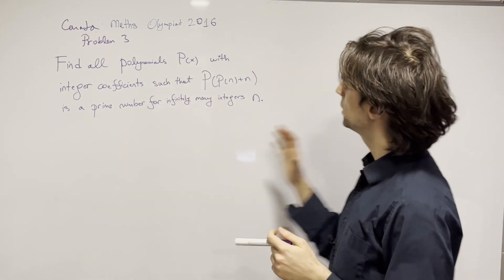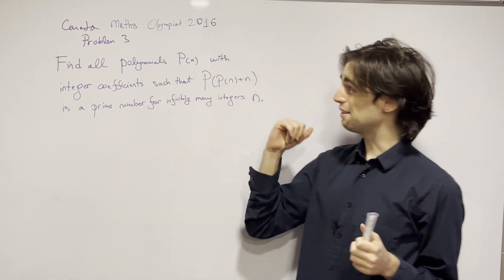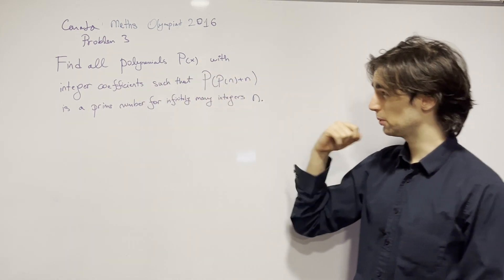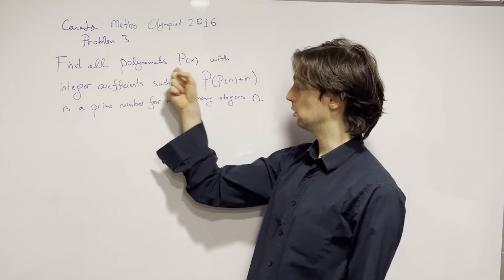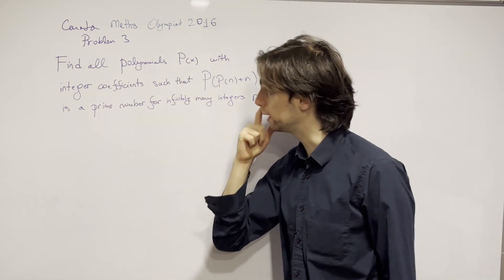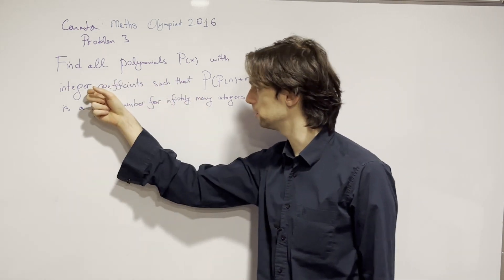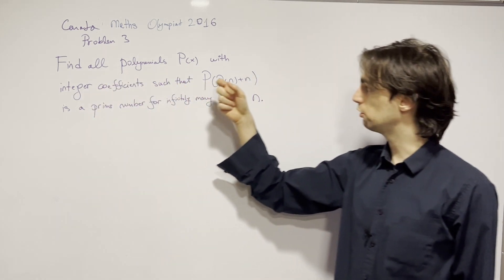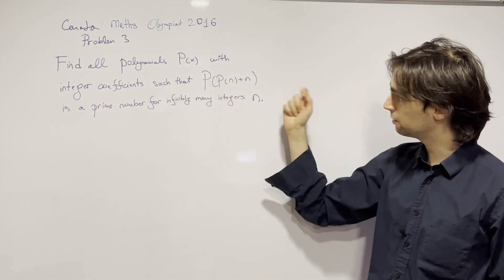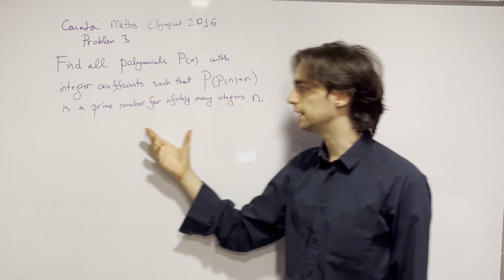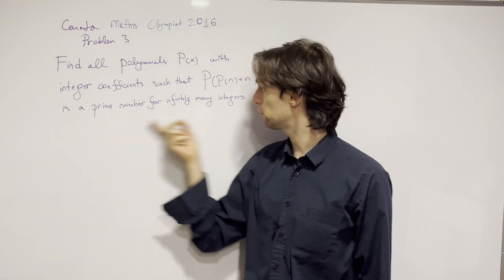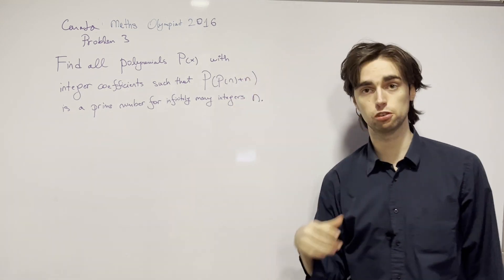So what do we do in this problem? We have a polynomial — we need to find all polynomials P(x) with integer coefficients such that P(P(n)+n) is a prime number for infinitely many integers n.